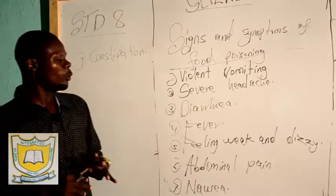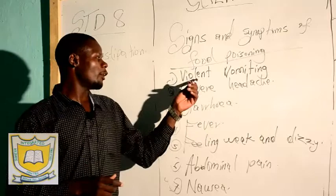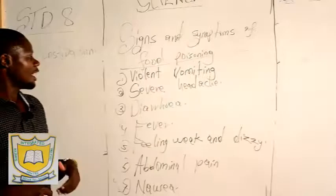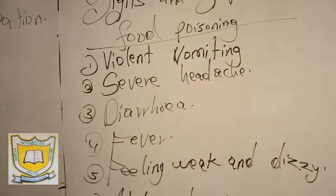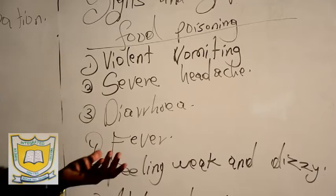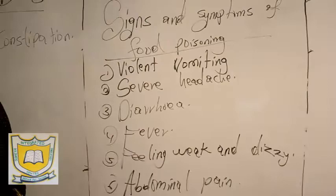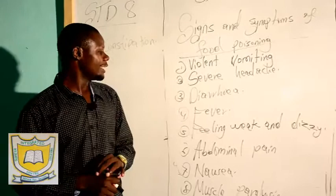Number one, when you consume food that has been poisoned, the first sign is violent vomiting. The gut has been affected, and you will find that the person is vomiting a lot. Number two, we have severe headache — the person will be complaining of a headache. Number three, violent diarrhea — this person you will find is staying next to the toilet. Number four, we have fever due to a rise in temperature.